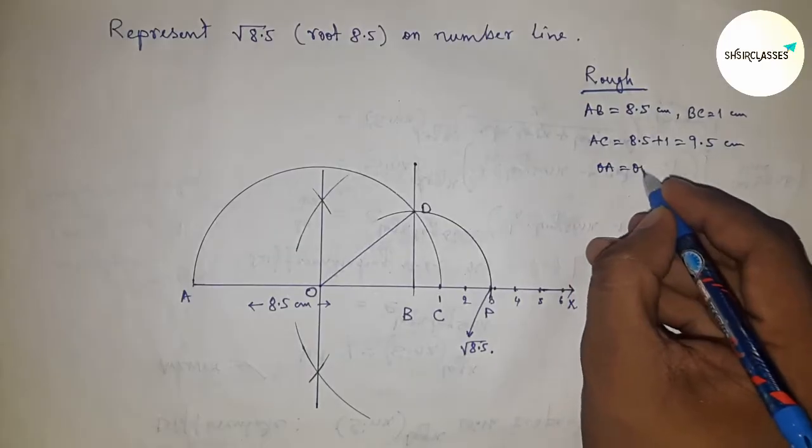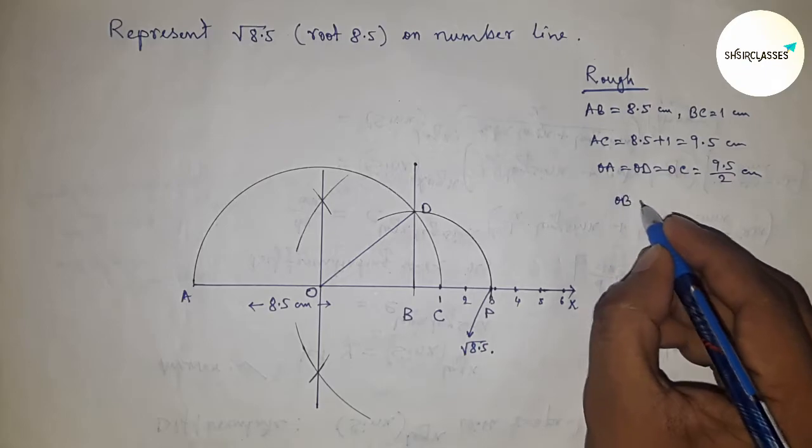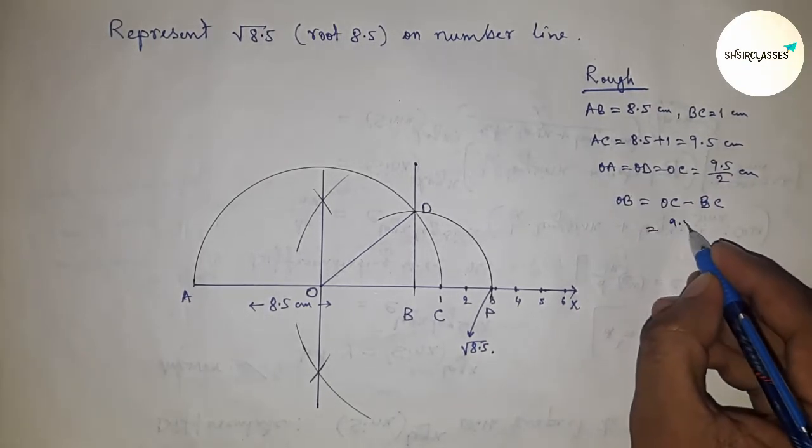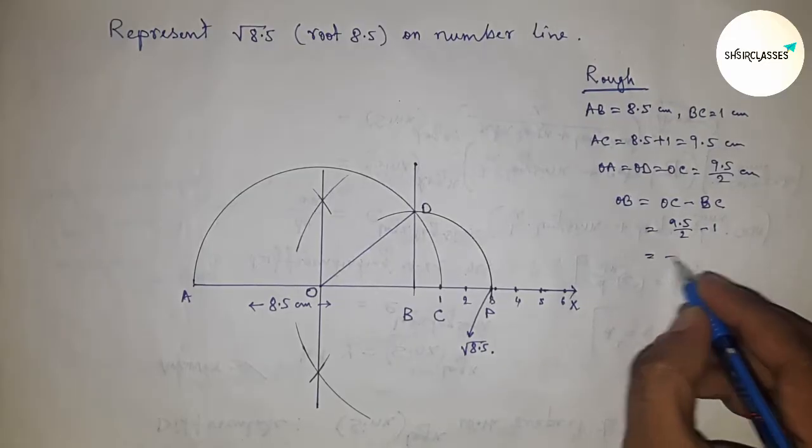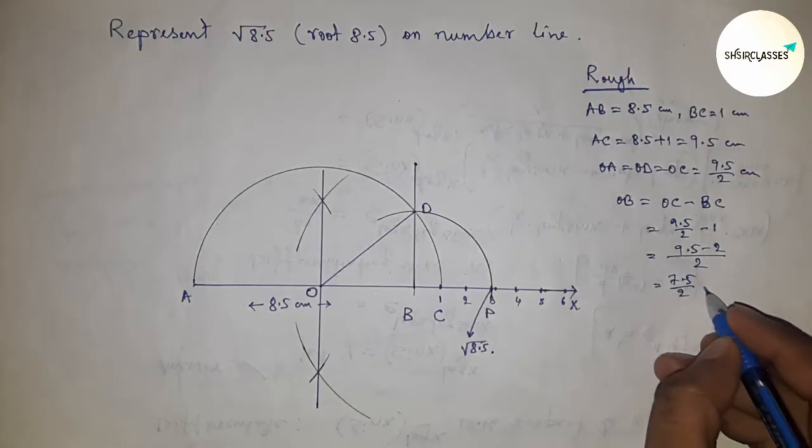The radius OA, OD, and OC equal 9.5 by 2. OB equals OC minus BC, so putting the values of OC and BC and calculating, we get 7.5 by 2.